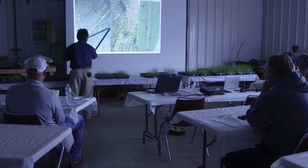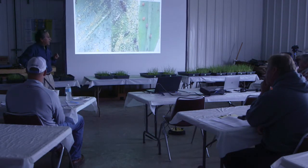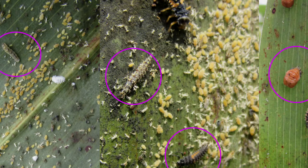Also here we have a lacewing larva — these are also very voracious. Have you seen the adult lacewing? In this case, the immature forms — the larva — and even the adult ones prey on aphids and all other insects.